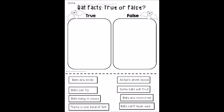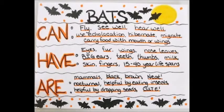You can have children do a word wall. Ask them what bats can do, what they have, and what they are. Children can answer: bats can fly, bats can use echolocation, they have eyes, fur wings, and they are mammals and nocturnal. This is a great way to review.